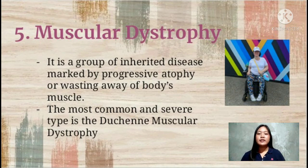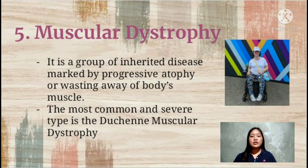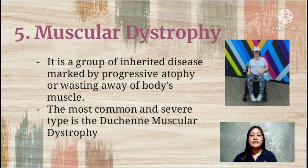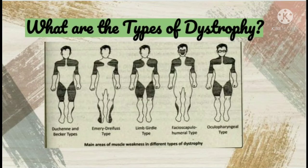The fifth condition is muscular dystrophy. It is a group of inherited diseases marked by progressive atrophy, or wasting away, of the body's muscles. The most common and severe type is Duchenne muscular dystrophy, which affects males only. About one-third of cases are due to genetic mutation in families with no prior history of the disease. The different types include the Duchenne and Becker type, Emery-Dreyfus type, Limb-girdle type, Facioscapulohumeral type, and Oculopharyngeal type.